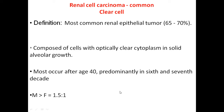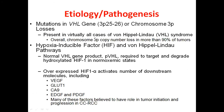We will discuss microscopically why it appears as clear cells and why it is called clear cells. The most common age of appearance of this tumor is around age 40, and it is predominantly seen in the sixth and seventh decade of life. In terms of male to female ratio, it is more commonly seen in males compared to females.